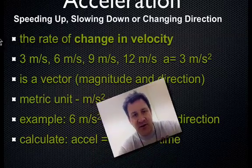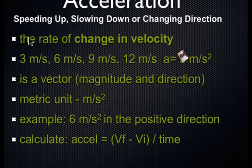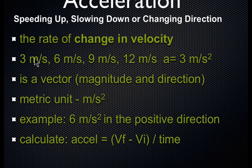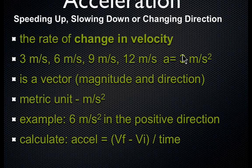Acceleration is typically defined as your rate of change of your velocity. That means your velocity is changing — and velocity is a vector — so you're either increasing, decreasing, or changing direction. Here's an example: positive 3 meters per second, then a second later 6 meters per second, then 9, then 12. Our acceleration is 3 meters per second squared — meaning every second, our velocity is increasing by 3 meters per second. It's 3 meters per second per second.